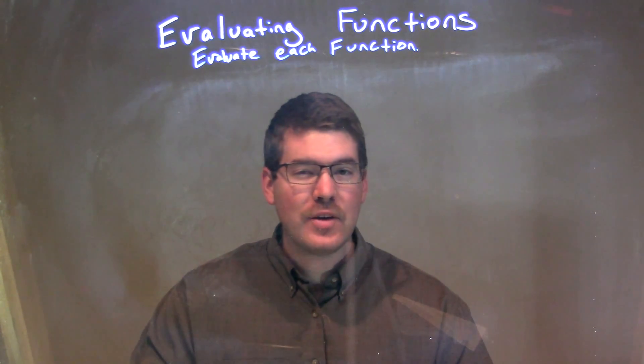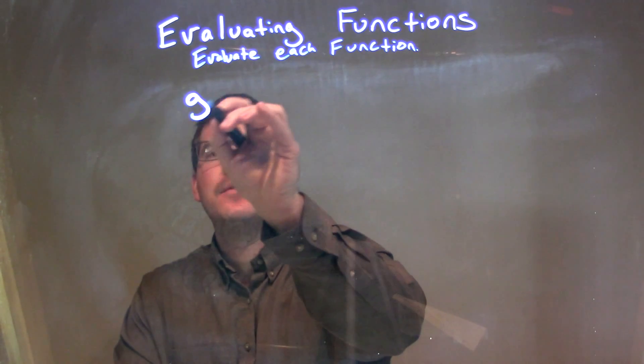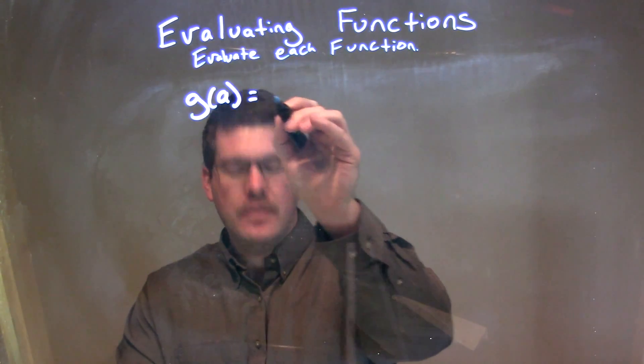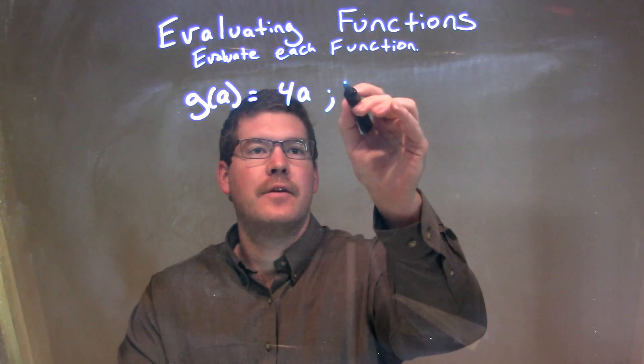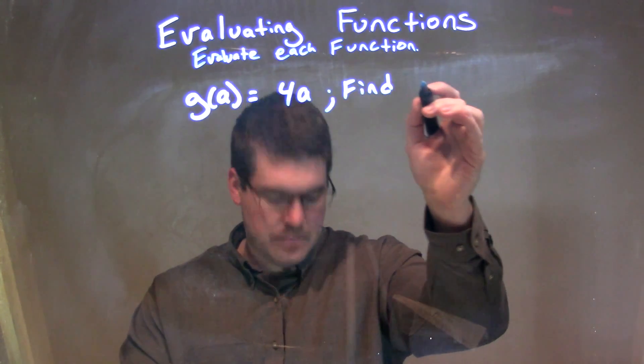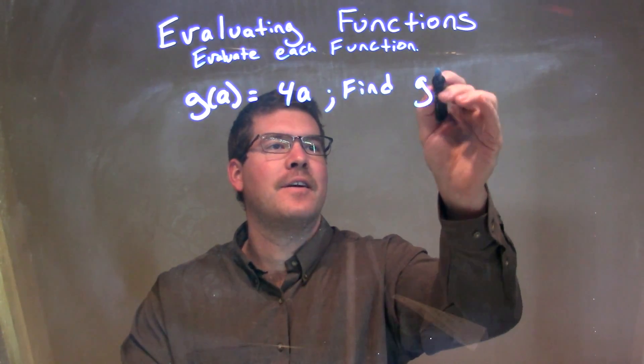So, if I was given this function, g of a is equal to 4a, and we want to find g of 2a.